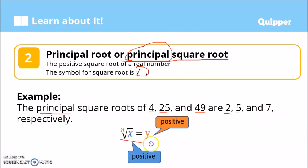In symbols, we have the nth root of x equals y. The small number in the radical sign indicates the root. If there is no number written there, it is automatically understood as 2, meaning it is a square root. The number inside the radical sign is positive, and of course the principal root is also positive.